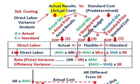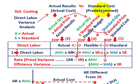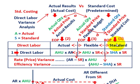For variance analysis in standard costing, we're looking at actual results versus a standard or predetermined cost for direct labor. For our standard cost, we take some standard quantity — in this case a standard quantity of direct labor hours — times the standard price or unit price for direct labor. So standard quantity times standard price equals our standard cost. That's what we base our variance on.